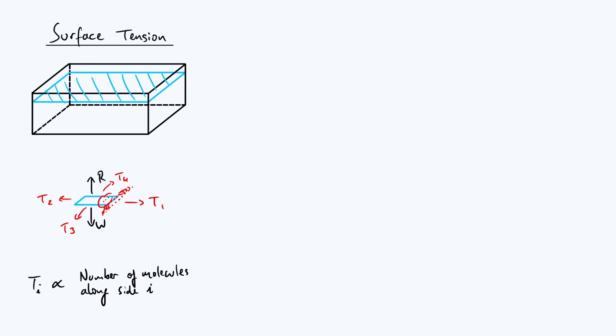Because all the liquid molecules are equivalent, it follows that the tension alongside i, Ti, is proportional to the number of molecules alongside i. The more molecules you have, the more individual forces of attraction you're adding up. From that we get the crucial result that the tension alongside i is proportional to the length of side i, because the longer the side is, the more molecules you have fitting along it.